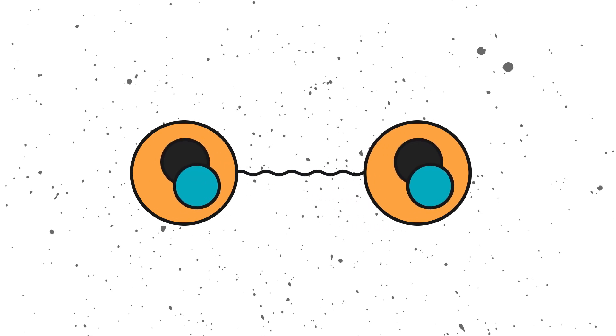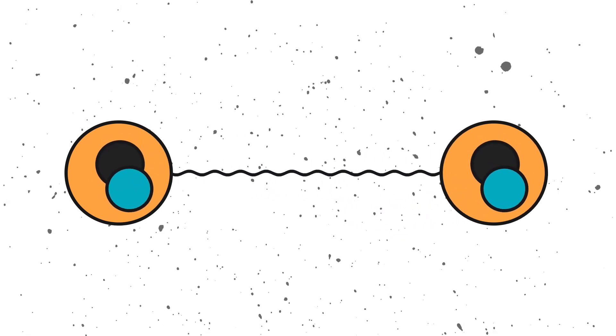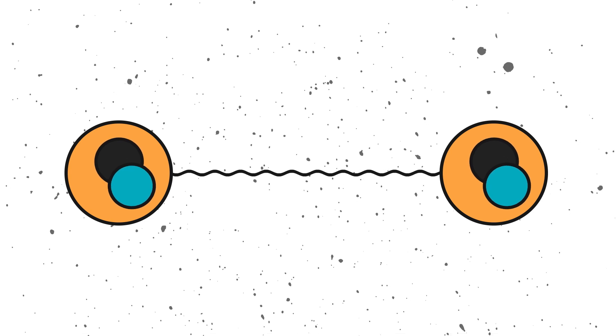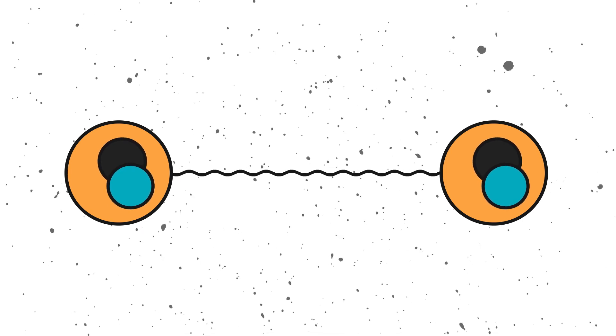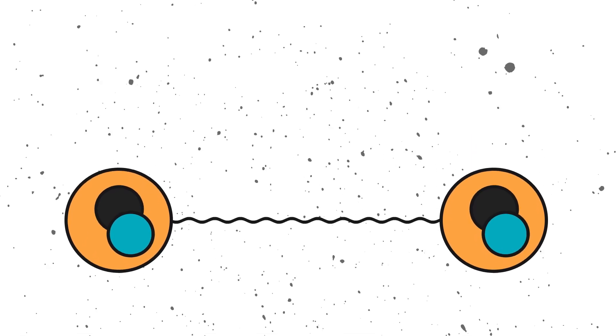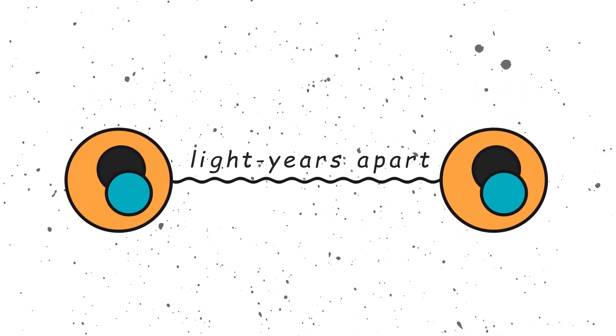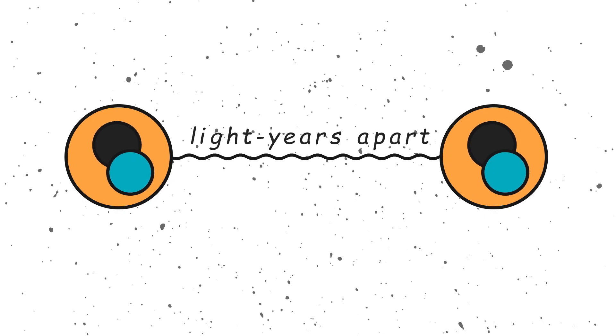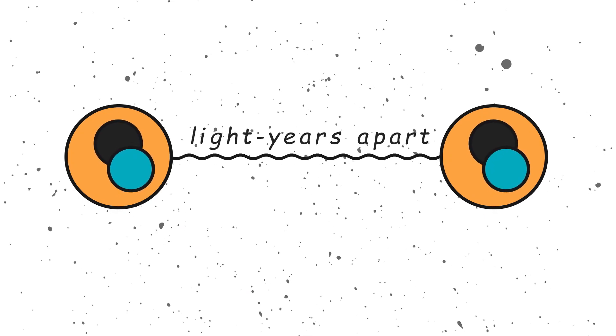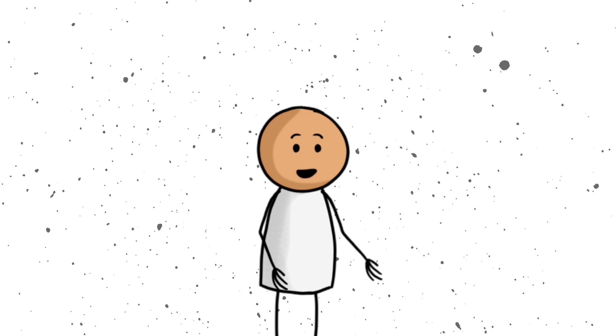Imagine you have two particles, tiny little things like photons or electrons. You link them together in a special quantum way so that they become entangled. Now, whatever happens to one of them will instantly affect the other, even if they are light years apart. It is like having two dice that always land on the same number, no matter how far apart they are or who rolls them. Sounds like magic, right? But it is very real.